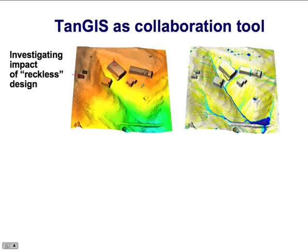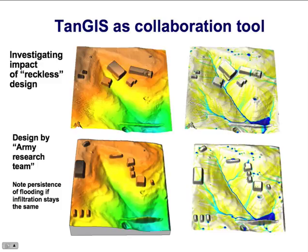Each time somebody comes to our lab, I ask them to create some new scenarios. Here, one of my colleagues tried to create a reckless scenario, putting buildings all over in unsuitable places. When we run the water flow simulation, you can see that the water is flowing around, potentially causing lots of trouble with erosion and also threatening the stability of the buildings. There is a lot of flooding and a huge overflow over the road.